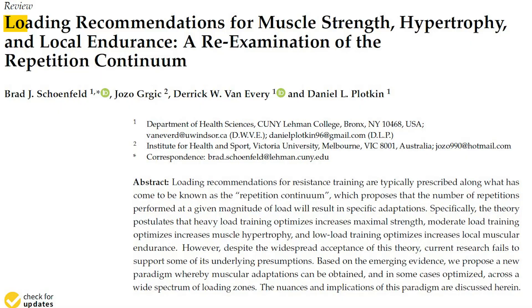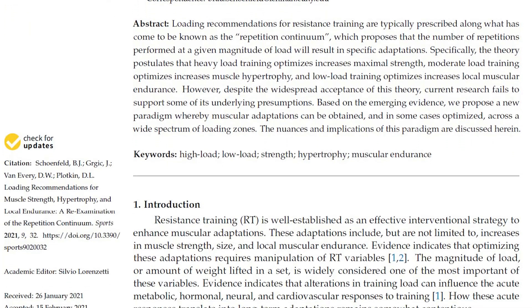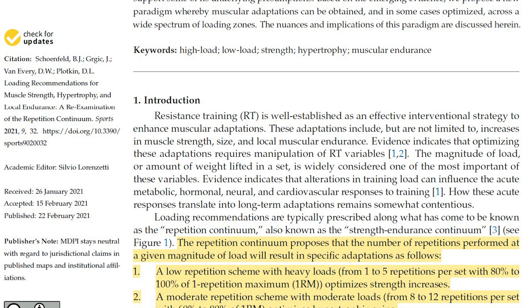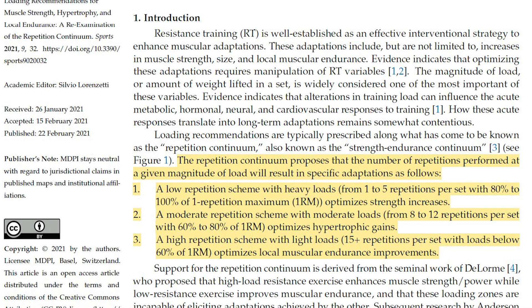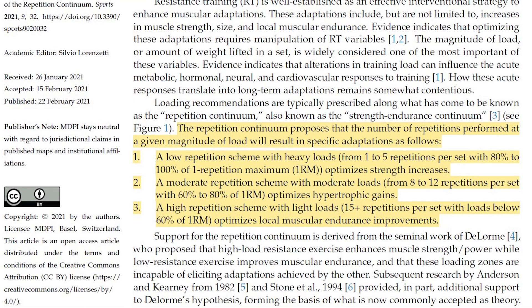Let's look at study number two, 2021, entitled 'Loading Recommendations for Muscle Strength, Hypertrophy, and Local Endurance: A Re-examination of the Repetition Continuum.' This basically explains that different loads will change the time under tension. When you're prioritizing maximizing strength and hypertrophy, time under tension goes out the window because there's no possible way of extending time under tension across all different loading systems. Remember that you want to build metabolic stress and mechanical tension using the principles of progressive overload.